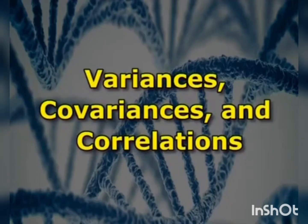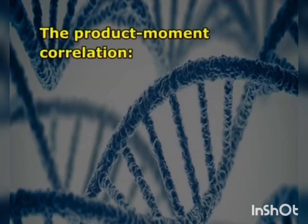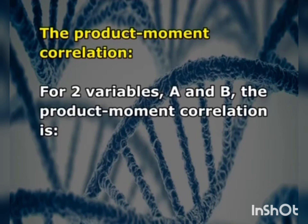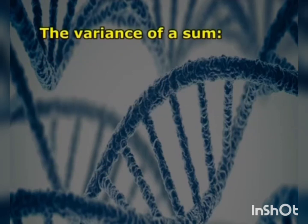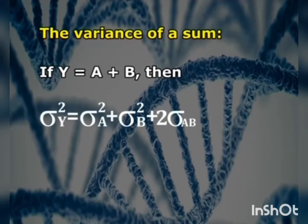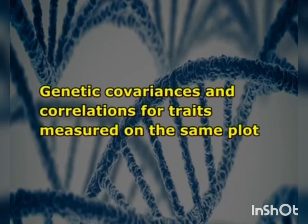To predict the response in the TPE to selection in the SE, the genetic correlation between performance in the SE and the TPE must be known. The Product Moment Correlation for two variables A and B is: R = σ_AB / (σ_A · σ_B). The variance of a sum: if Y = A + B, then σ²_Y = σ²_A + σ²_B + 2σ_AB.